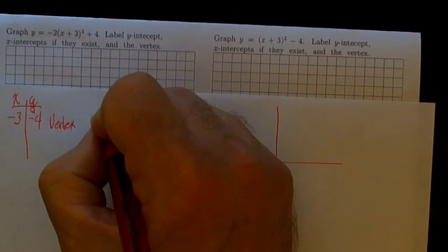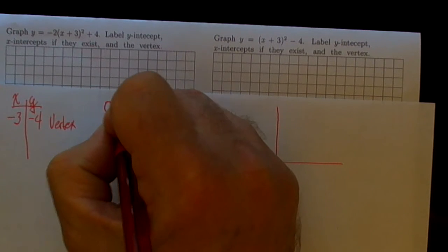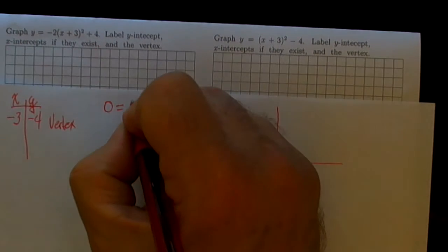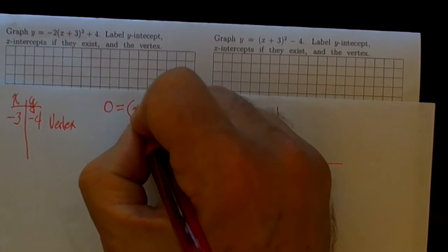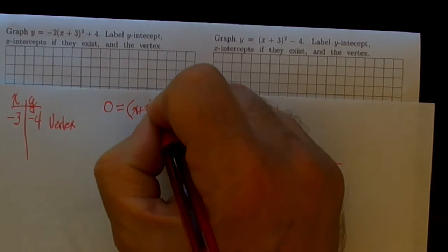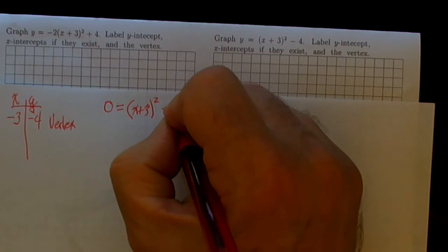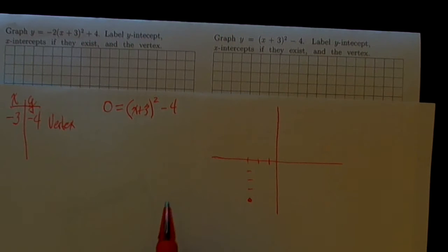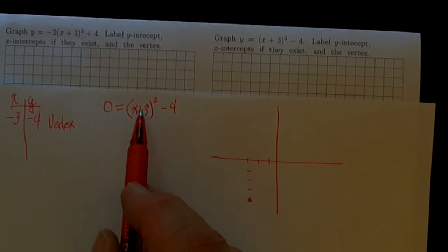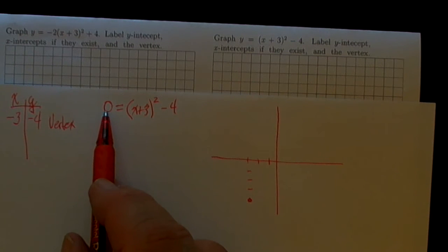The x-intercepts occur when y equals 0. So y = 0 gives us (x + 3)² - 4 = 0. Now we've learned in past videos that solving for the x-intercepts when we've got things in vertex form is really kind of easy.